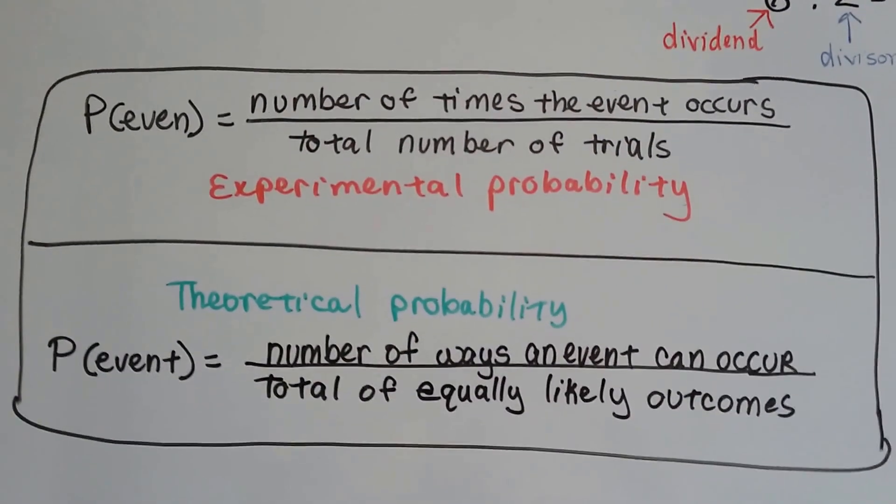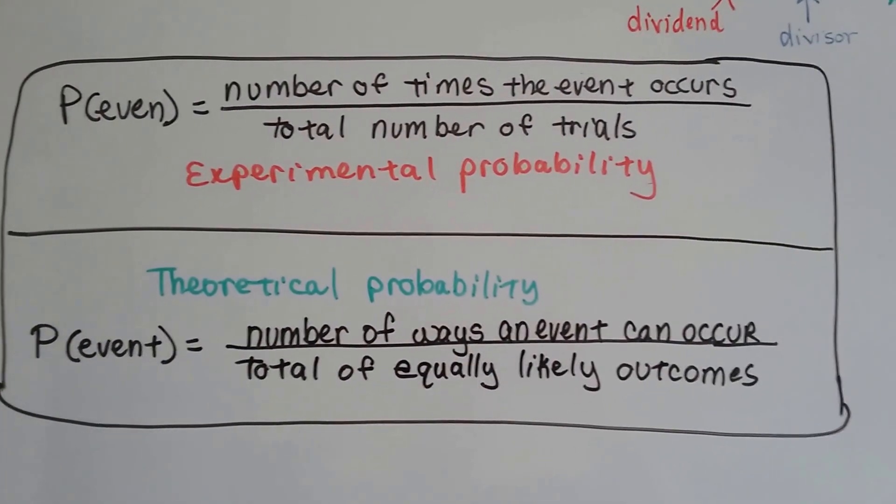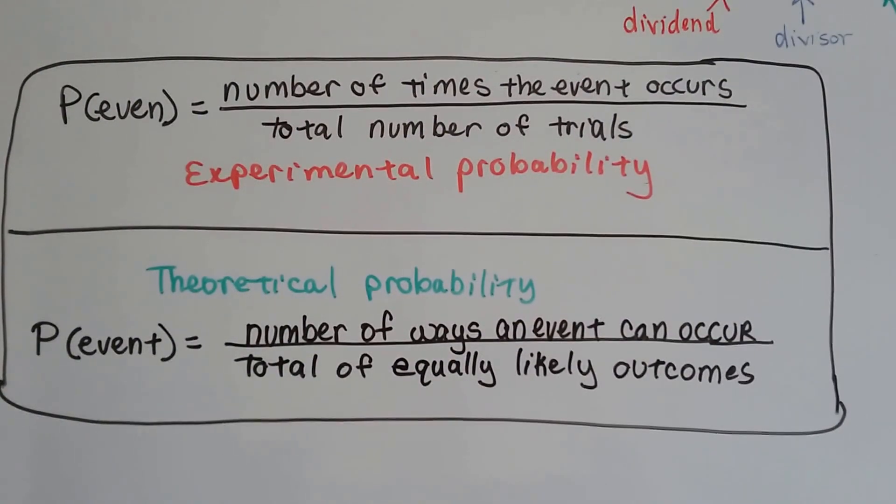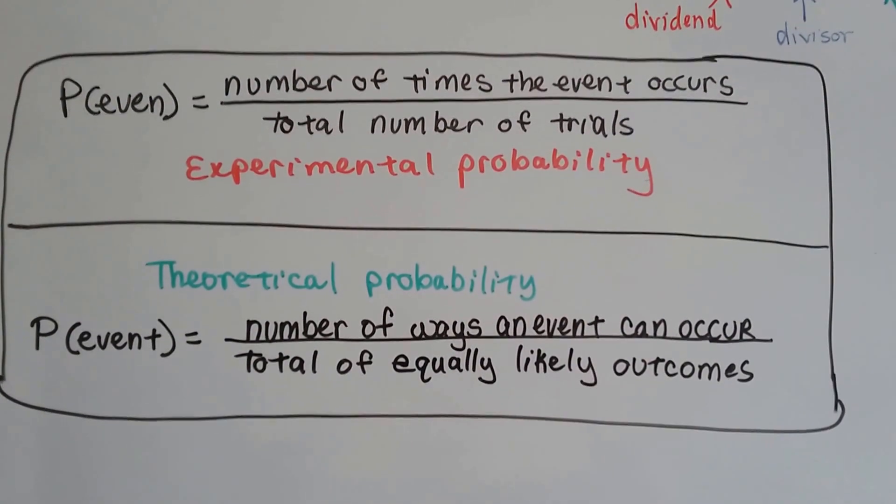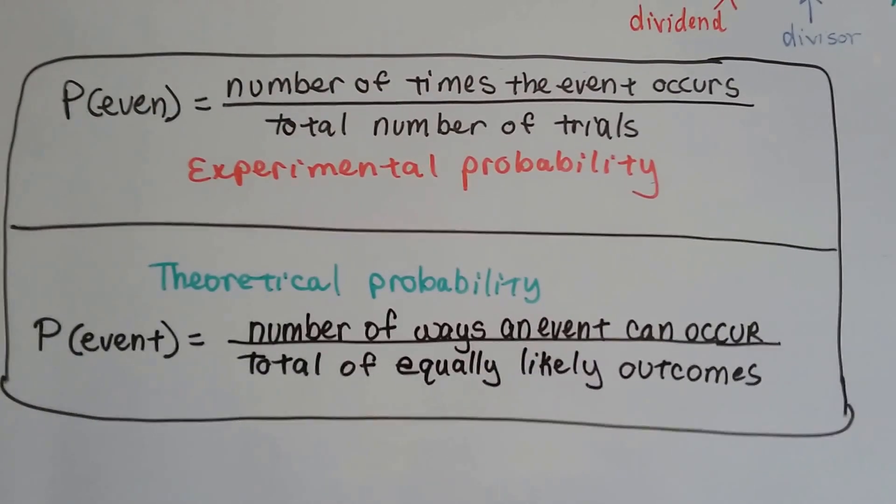We're actually doing the physical work. In theoretical probability, we're not doing any physical work. We're thinking, and we're looking at the number of ways an event can occur, and we're comparing it to the total of equally likely outcomes.